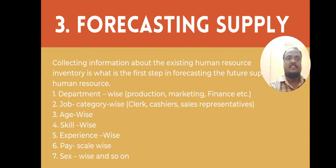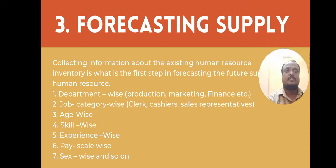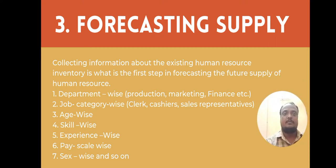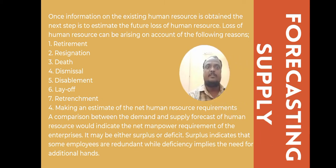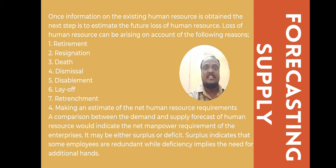Third step, forecasting supply — collecting information about the existing human resource inventory is the first step in forecasting the future supply of human resources, categorized department-wise, job category-wise, age-wise, skill-wise, experience-wise, pay scale-wise, and by gender. The next step is to estimate future losses of human resources arising from retirement, resignation, death, dismissal, disablement, layoff, or retrenchment.